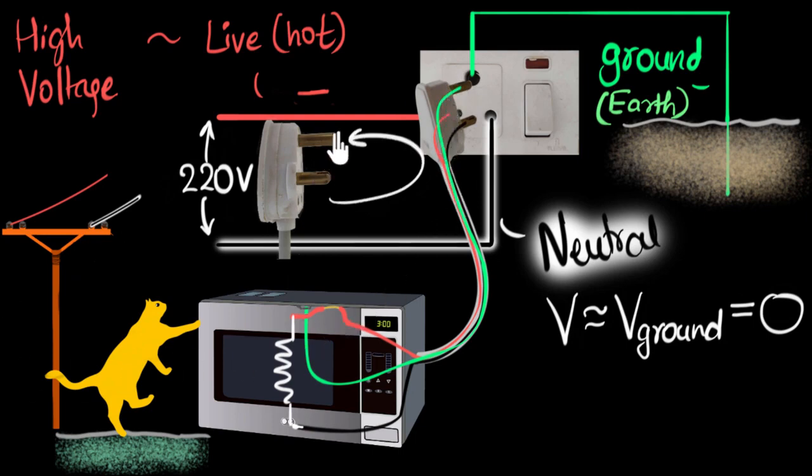And of course, the ground pin is also made thicker to ensure that we connect the plug in the proper position. This way, there is no chance that the ground pin will get inserted into the live hole, which can again cause problems.